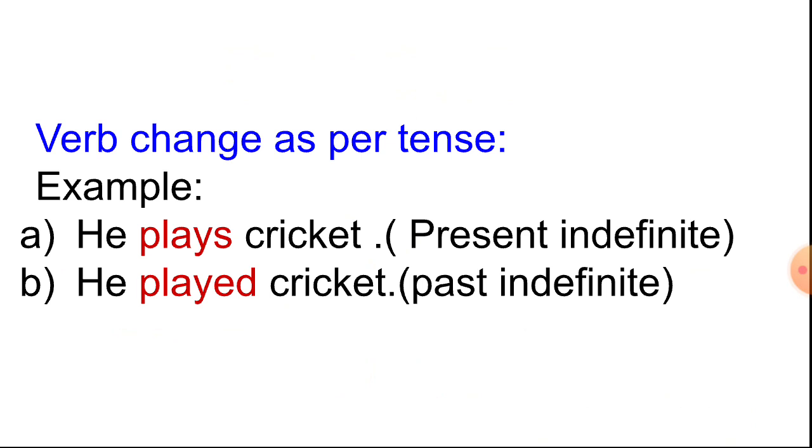Firstly, we are noticing verb change as per tense. Example: He plays cricket - present indefinite tense. He played cricket - past indefinite tense. That means here the verb's form changed. Why did it change? Because of tense. So here these two verbs are finite verbs.